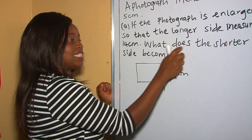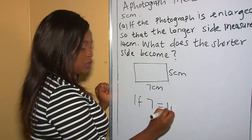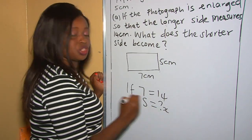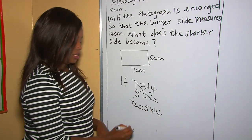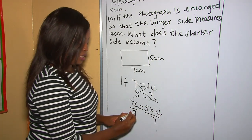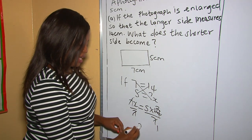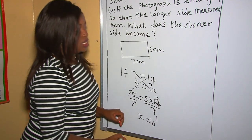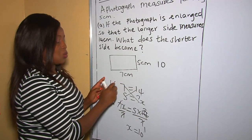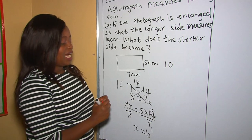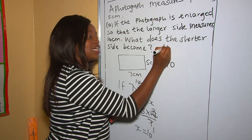The question is: what does the shorter side become? If 7 has become 14, what does 5 become? We cross multiply: 7x equals 5 times 14. Dividing both sides by 7, x equals 5 times 2, which is 10. Therefore our new width after enlargement is 10 centimeters. So the shorter side becomes 10 centimeters.